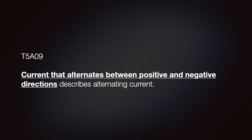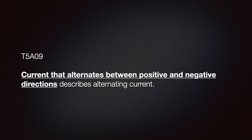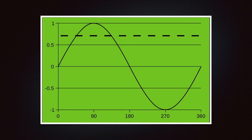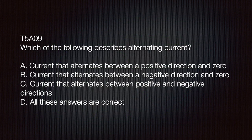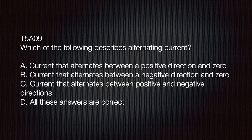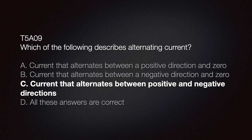You might already know this, but just in case you don't. Current that alternates between positive and negative directions describes alternating current. This slide shows an alternating current wave as it oscillates between positive and negative. This is called the sine wave. Our exam question might look like this. Which of the following describes alternating current? A, current that alternates between a positive direction and a zero. B, current that alternates between a negative direction and a zero. C, current that alternates between positive and negative directions. Or D, all these answers are correct. You should have known the correct answer is C, current that alternates between positive and negative direction.